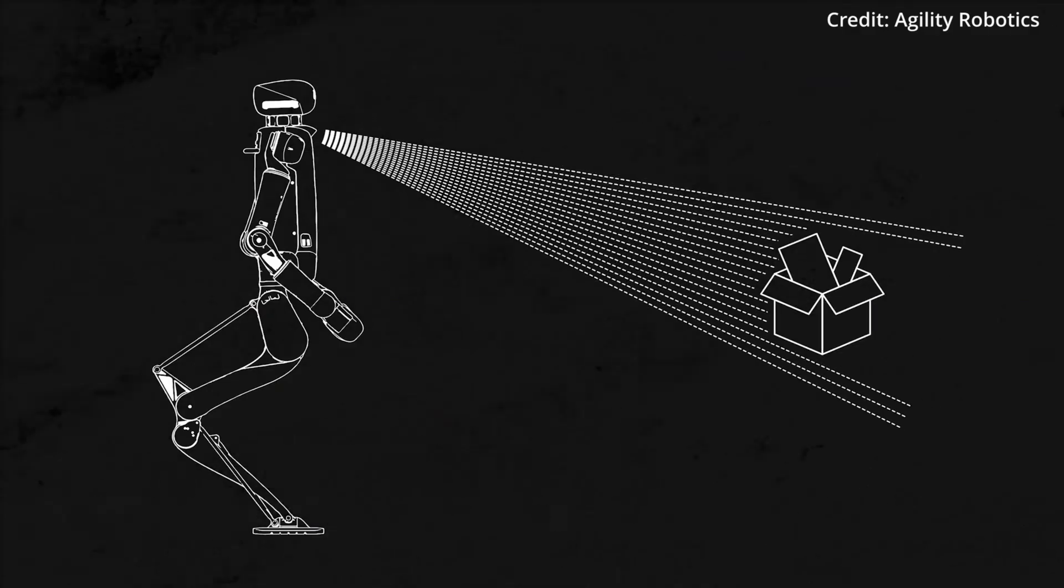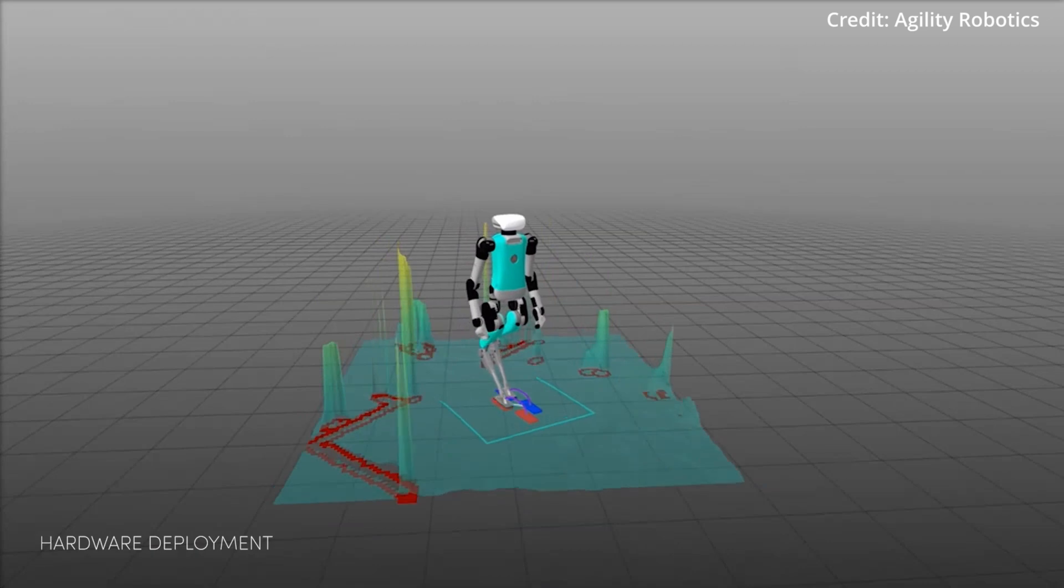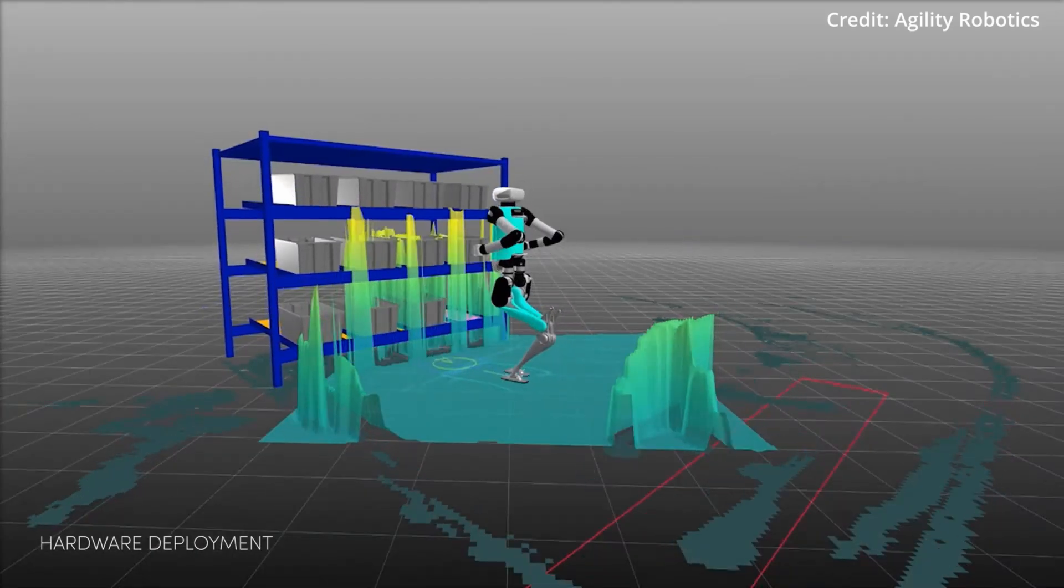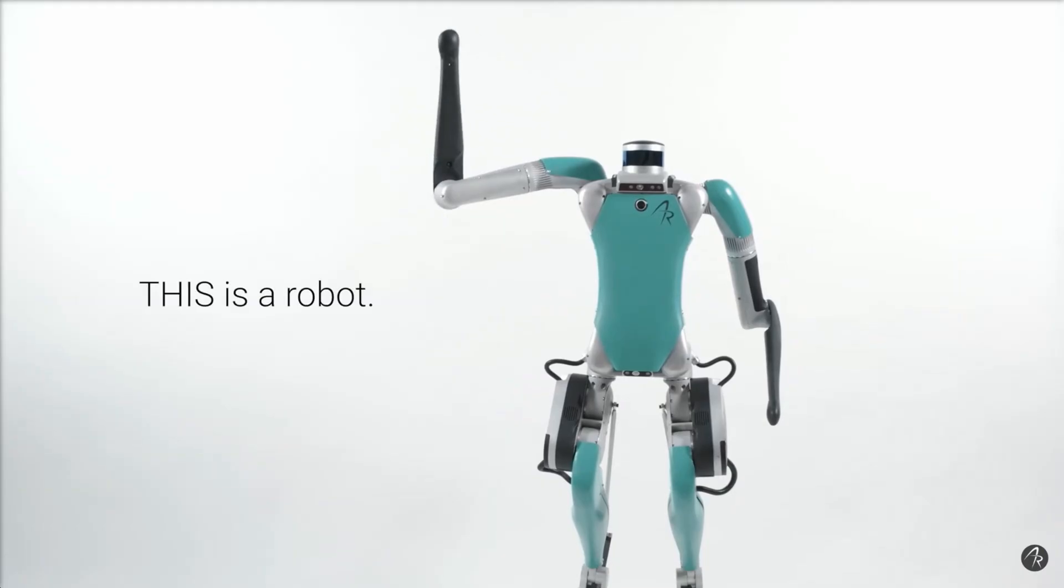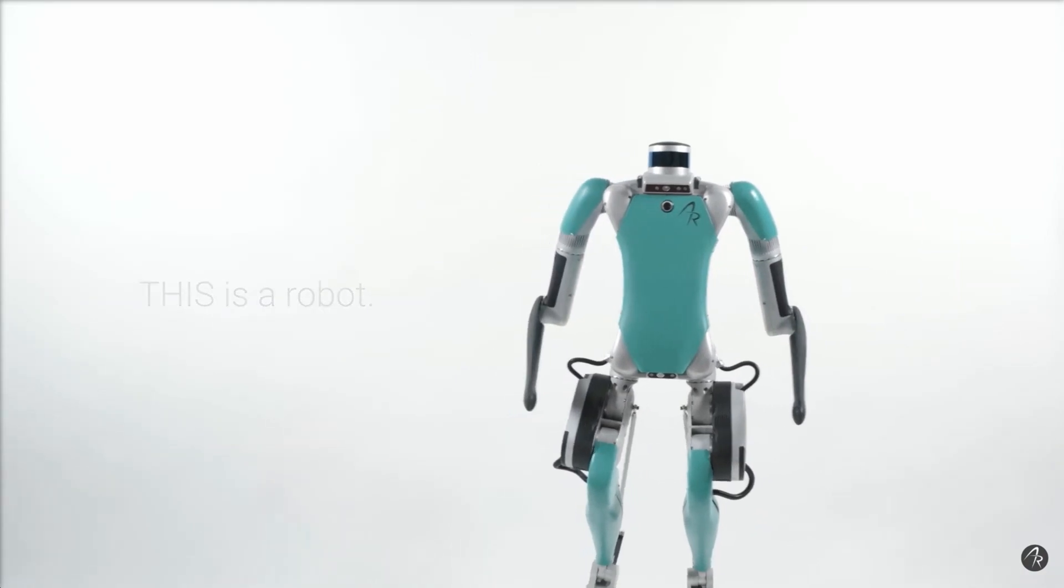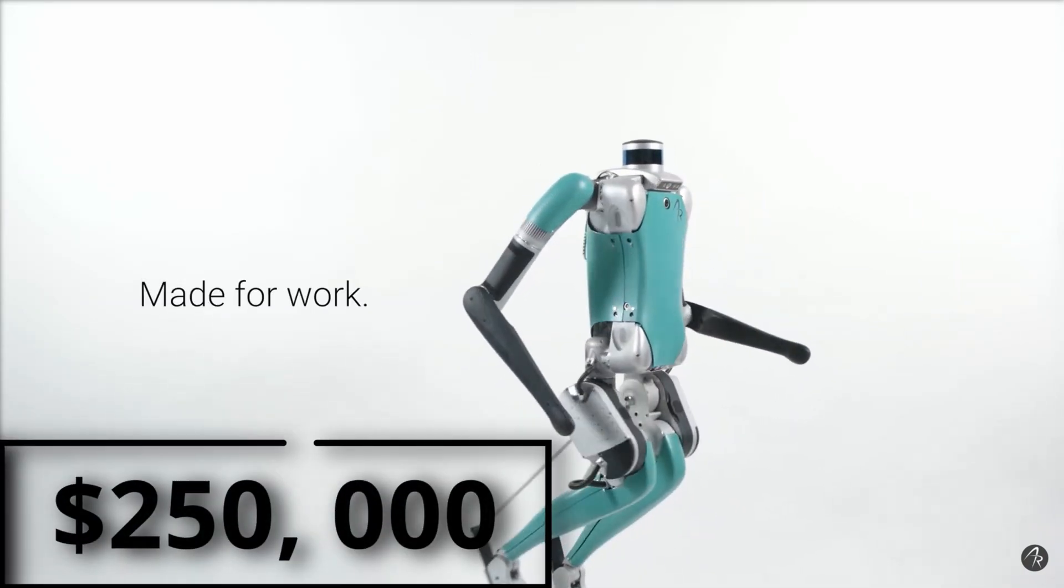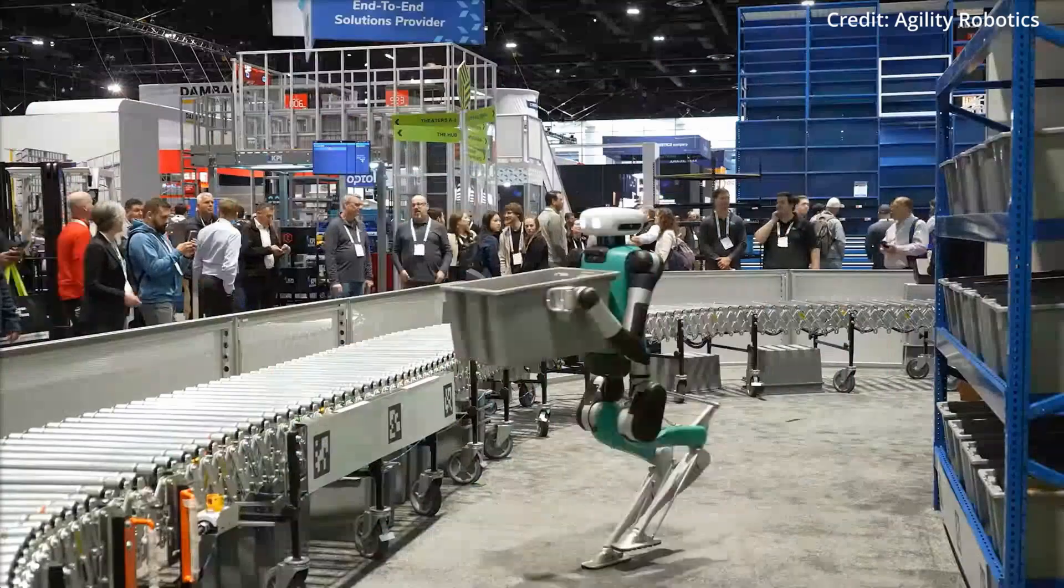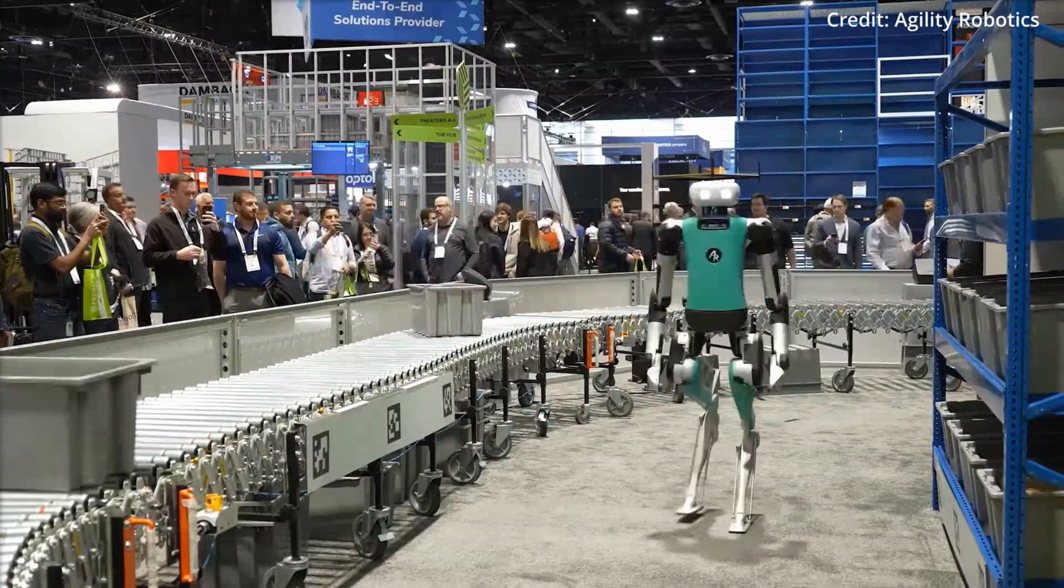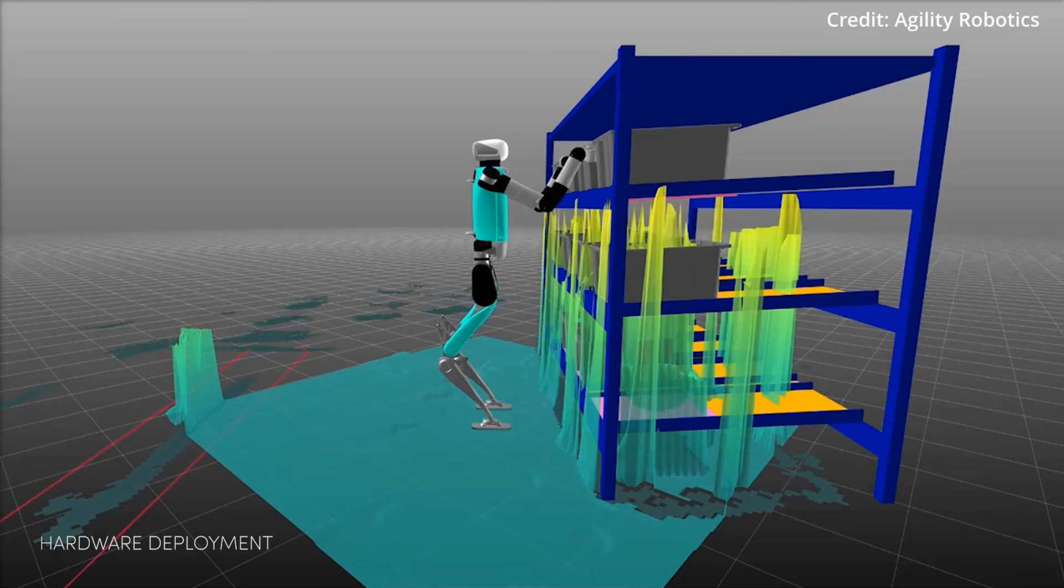At first, Digit is intended for warehouse and factory settings with the aim of optimizing logistics and material transportation, with the official rollout being scheduled for next year at a price point of only $250,000 per unit. Plus, the company is also planning to provide leasing and renting options in the near future.